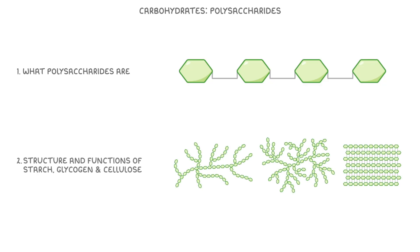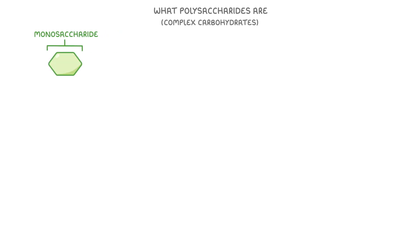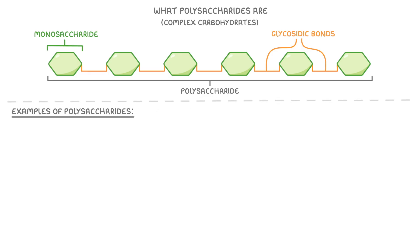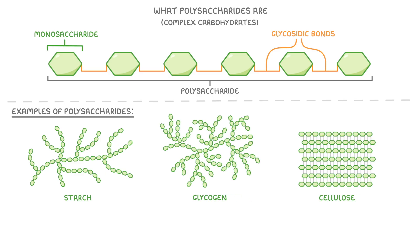In this video we're going to learn about carbohydrates, and specifically polysaccharides. We'll cover what polysaccharides are, and the structure and functions of starch, glycogen and cellulose. Polysaccharides are complex carbohydrates, made up of many monosaccharides that are linked together with glycosidic bonds. The entire molecule shown here would be called a polysaccharide. Common examples include starch, glycogen and cellulose. In terms of useful functions, polysaccharides act as energy storage molecules, but they also provide structural support for living organisms.